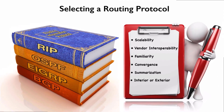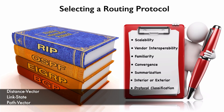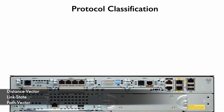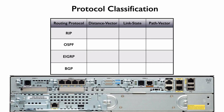One more criterion for selecting a routing protocol is how we classify it. There are three main categories: distance vector, link state, and path vector. A distance vector routing protocol sends a full copy of its routing table to its directly connected neighbors periodically, even if there have been no network changes. RIP is an example of that.